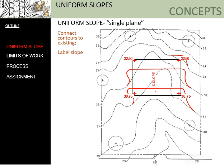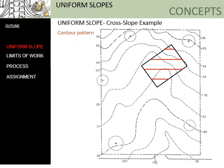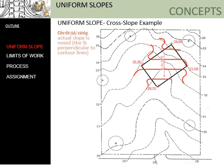We can also look at this with a different surface where contours are placed closer together because the uniform surface sits on top of a steeper slope. Again, we connect the proposed contours into the existing contours as they come off the uniform slope. We must include the required information: spot elevations on the corners and the slope indicated across the uniform slope — always in the steepest direction, perpendicular to the contours going down the steepest part of the slope.